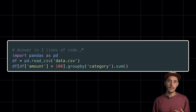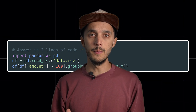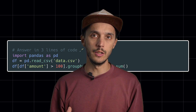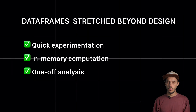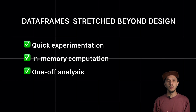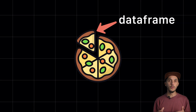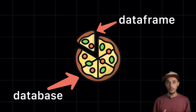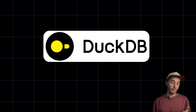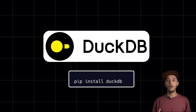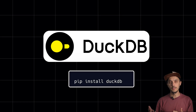Here is where things get messy. We've pushed DataFrames way beyond their original design. They were built for quick experimentation, in-memory computation, or one-off analysis. But we are now trying to use them for everything. DataFrame libraries give you one slice of what a database does, and then you end up stitching together a bunch of other Python libraries to fill the gaps. So what if you could get the simplicity of DataFrames with the power of a real database? That's DuckDB.